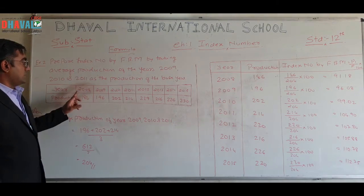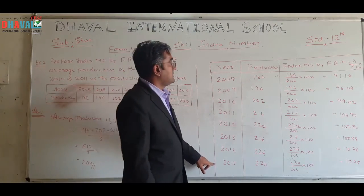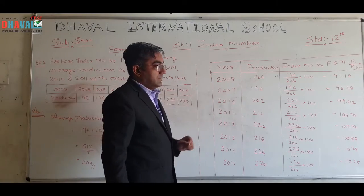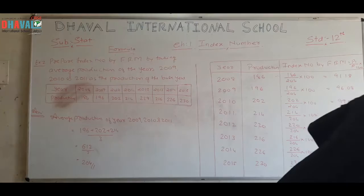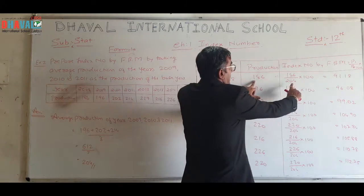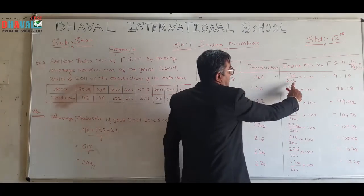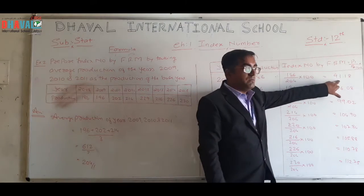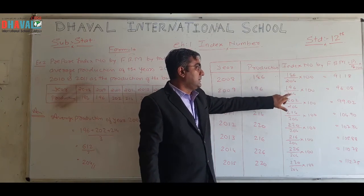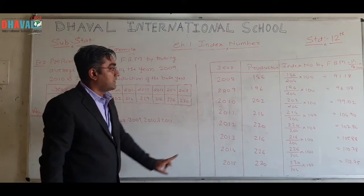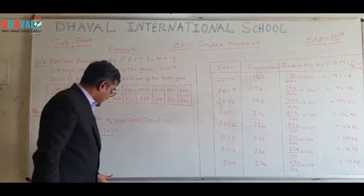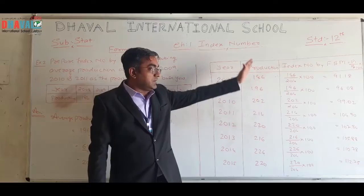Now we start the answer. For the first year: price of current year is 186, divided by price of base year 204, into 100. Answer: 91.18. For year 2009: price of current year is 196, divided by price of base year 204, into 100. Answer: 96.08. For year 2010: price of current year is 200, divided by price of base year 204, into 100. Answer: 99.02. Every year is divided by 204 to get the index number.